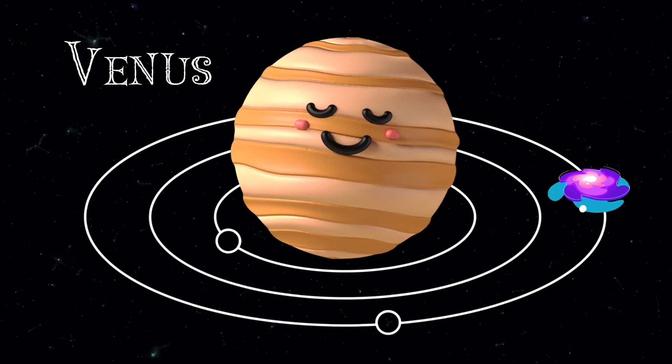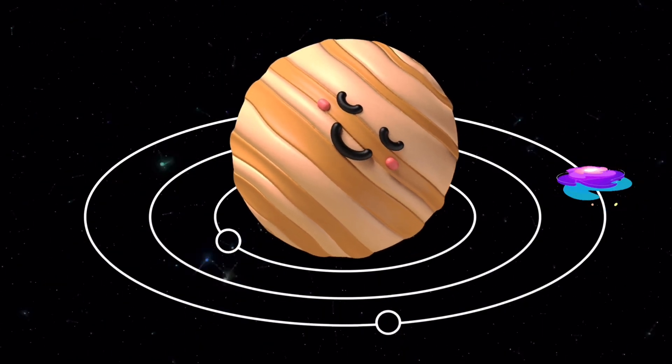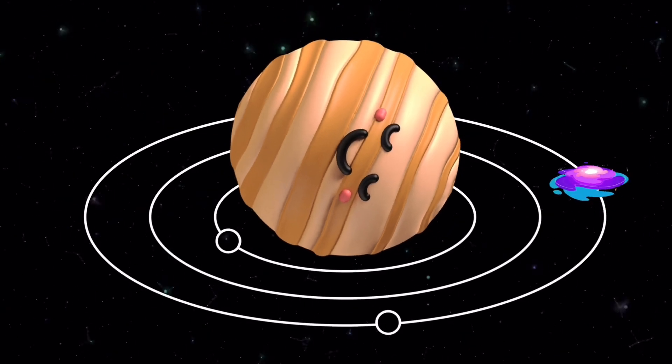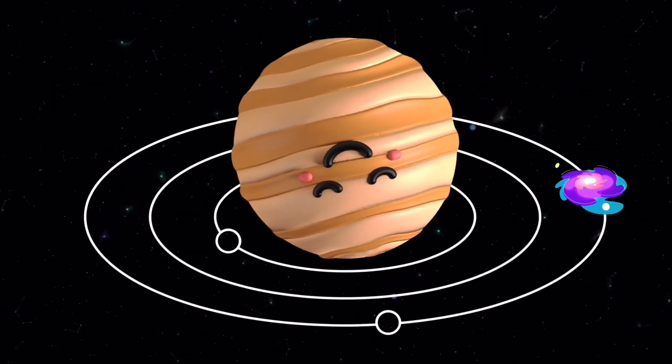I have no atmosphere, have no seasons or satellite. Unlike others I rotate clockwise. My thick clouds of carbon dioxide allow me to receive little sunlight.